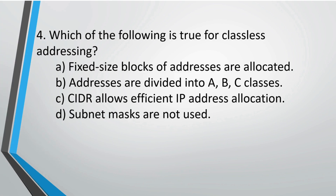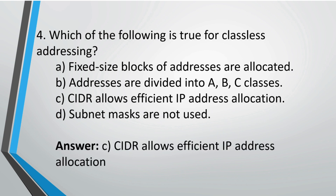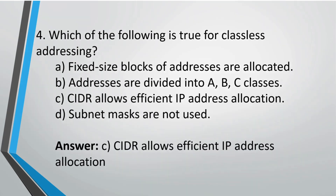Question 4: Which of the following is true for classless addressing? Option A: fixed size blocks are allocated; B: addresses are divided into A, B, C classes; C: IDs allow efficient IP address allocation; D: subnet masks are not used. The correct option is C.